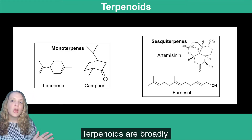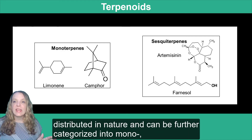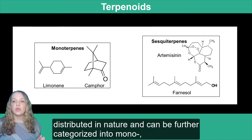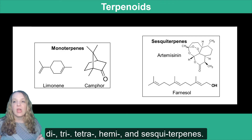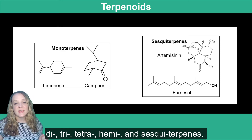Terpenoids are broadly distributed in nature and can be further categorized into mono, di, tri, tetra, hemi, and sesquiterpenes.